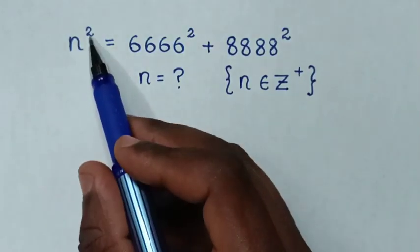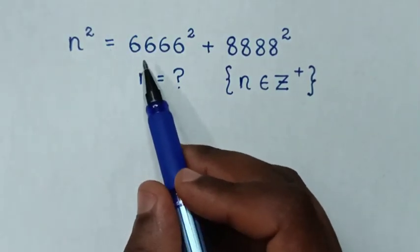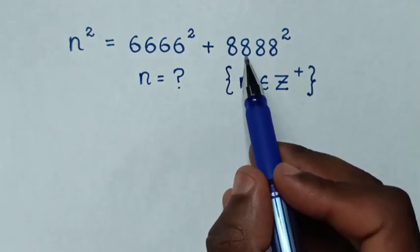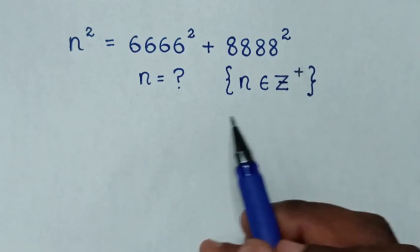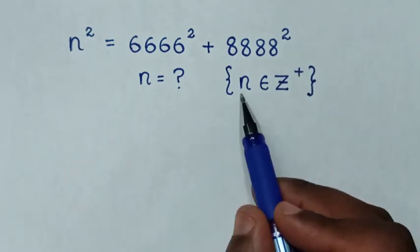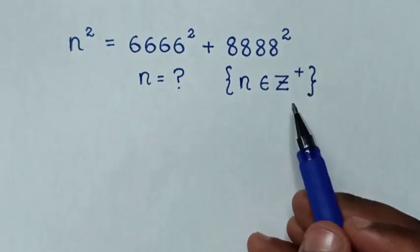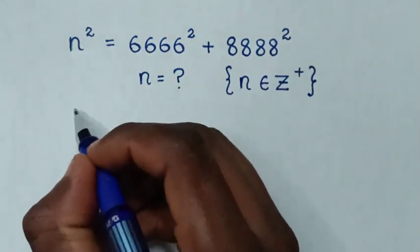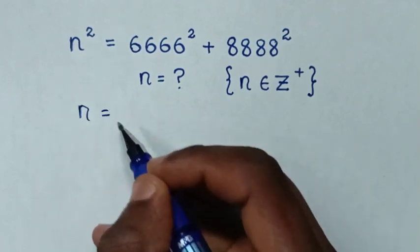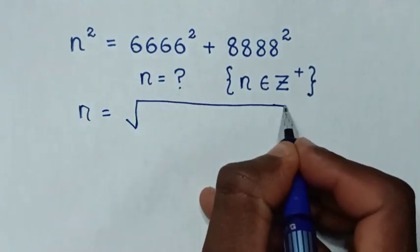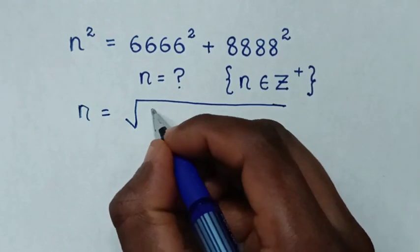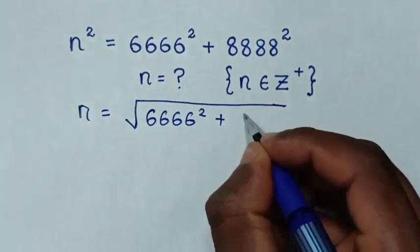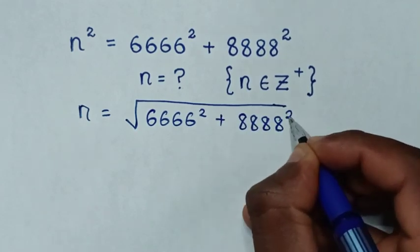Hello. n squared is equal to 6,666 squared plus 8,888 squared. Define the value of n such that n is an element of a positive integer. First, we'll apply square root on both sides. Then n is equal to the square root of 6,666 squared plus 8,888 squared.